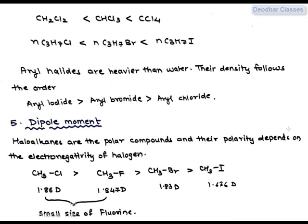For aryl halides, they are heavier than water and their densities follow the trend. Aryl iodides, obviously the one with the biggest halogen has highest density, then aryl bromide and then aryl chloride.